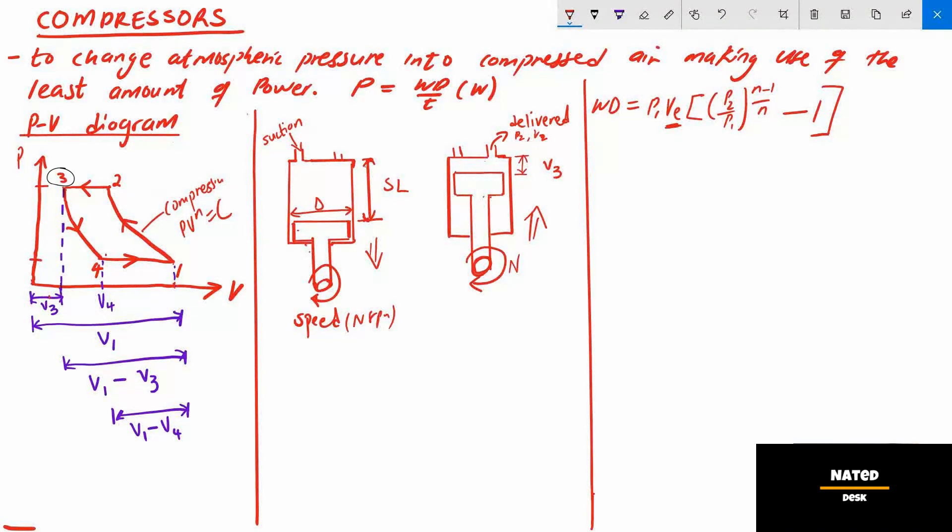V3 is what we refer to as free or clearance volume. This free volume V3 happens when the piston is at the top of its stroke, so it leaves a small space of air between the top of the cylinder head and the piston top. This air is not delivered, it acts as clearance so it remains inside the cylinder.